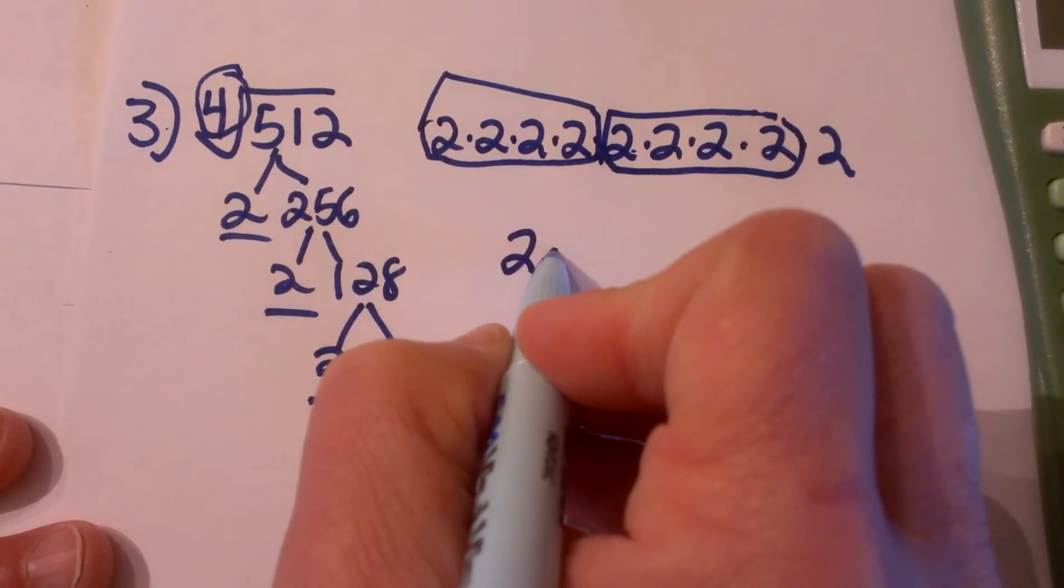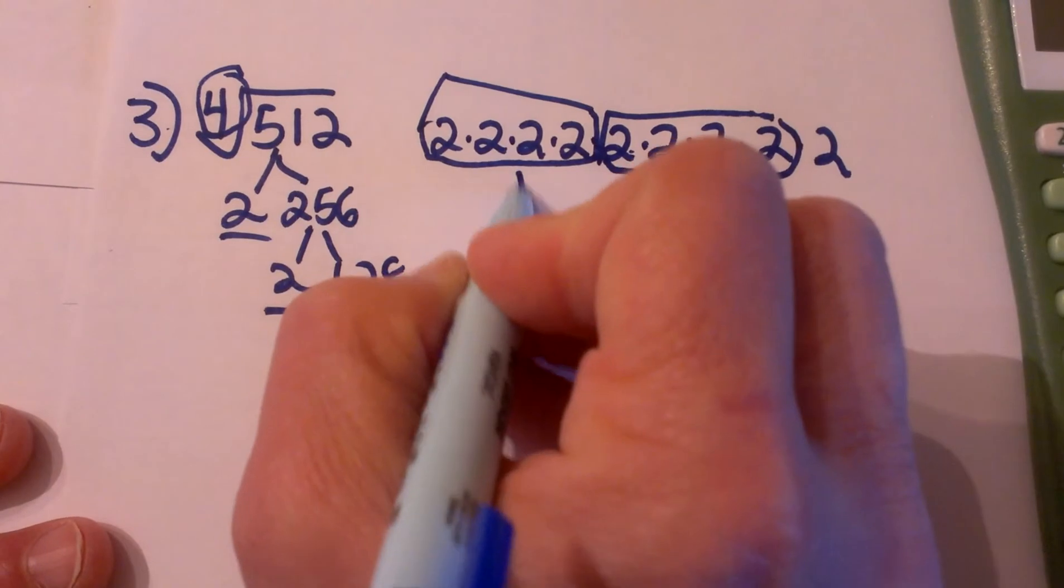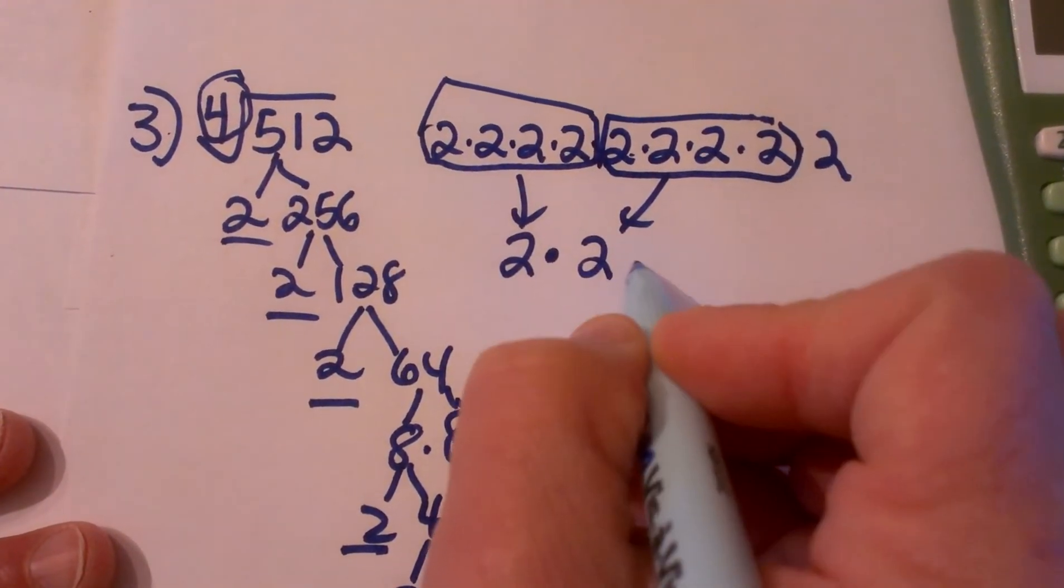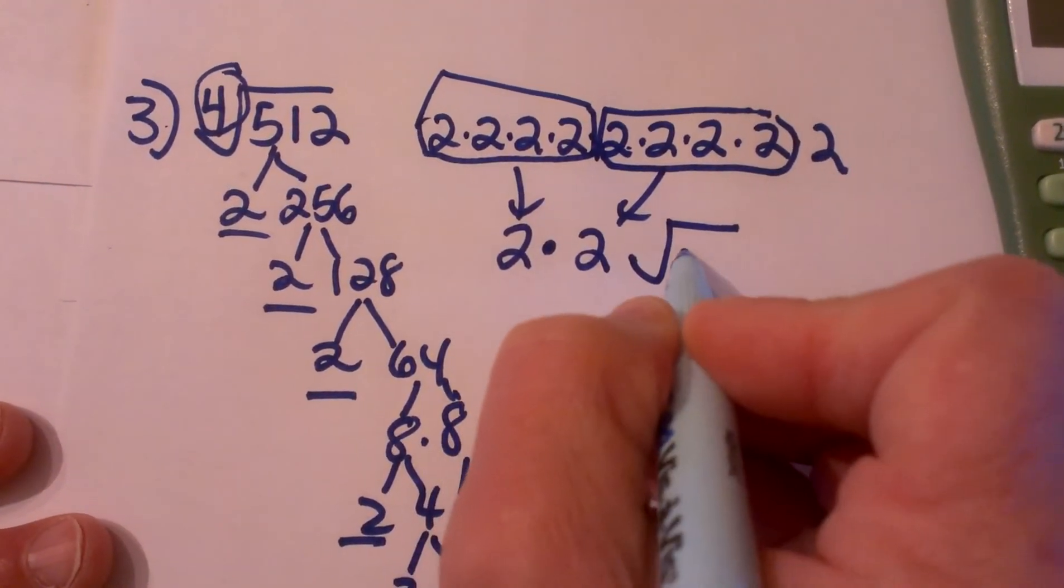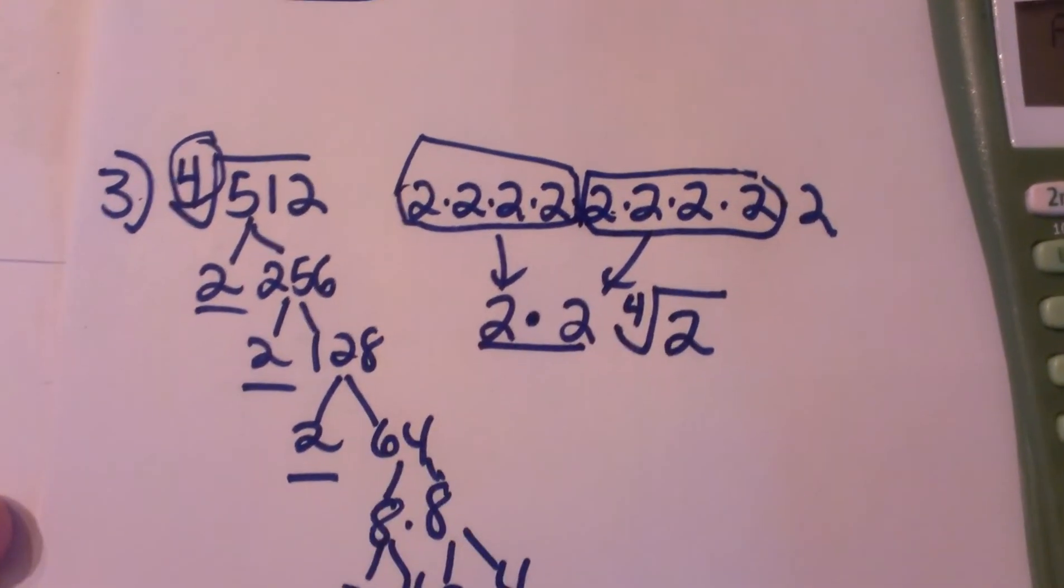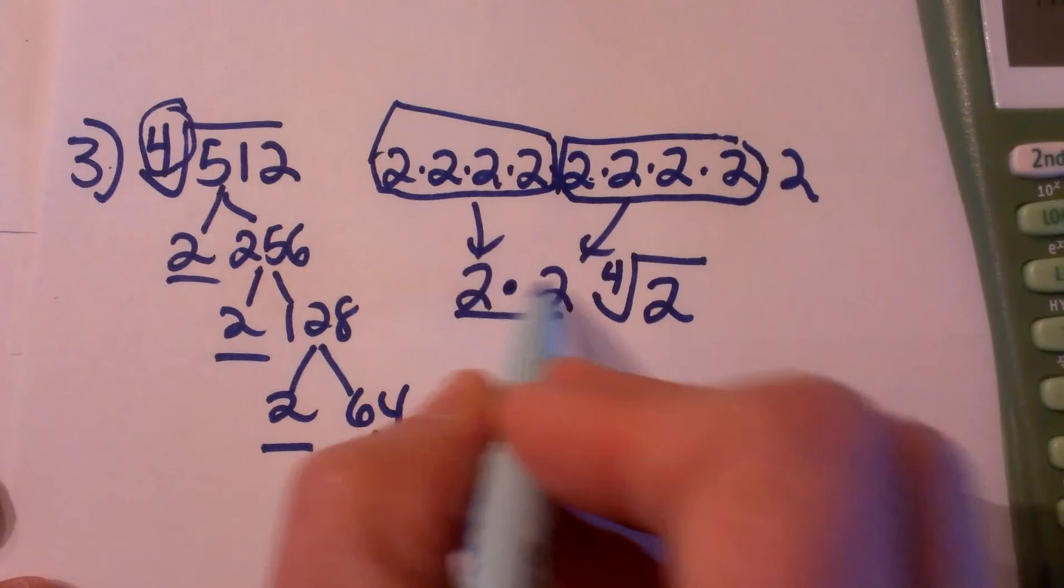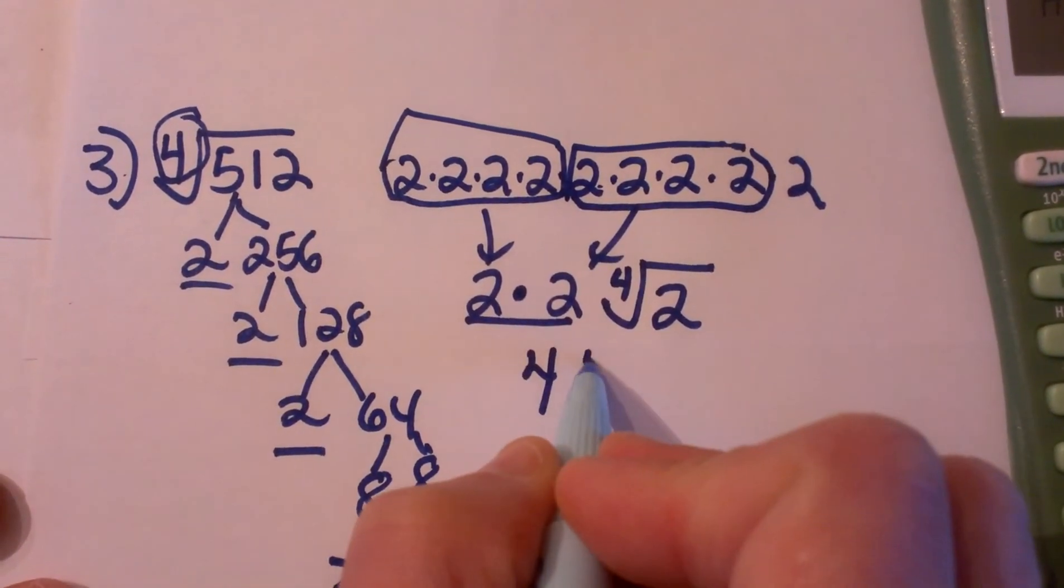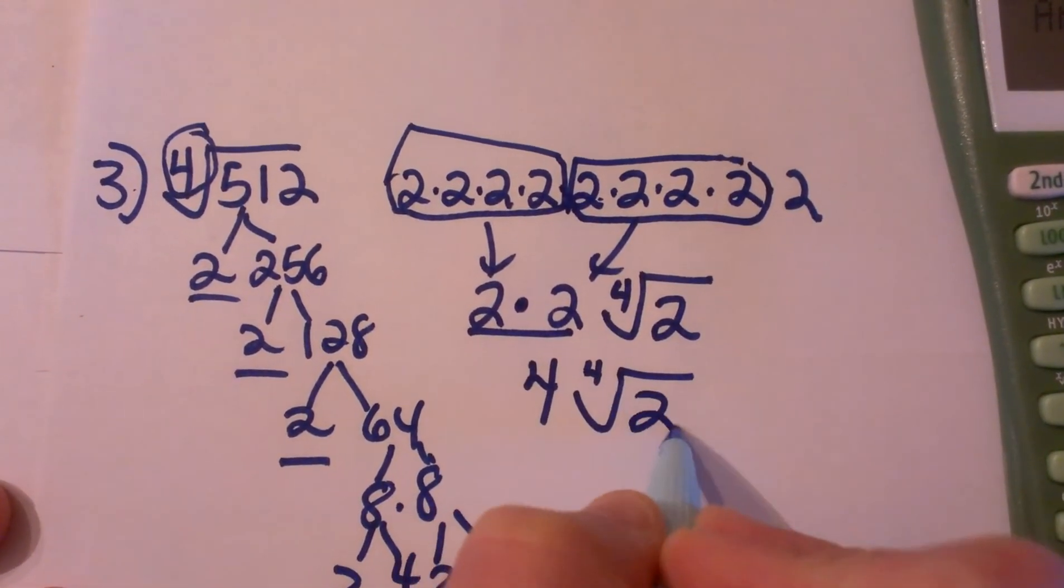So on the outside of the radical I am going to have 2 times 2 to represent each one of these groups. But then I have a 9th one, so it is going to have to stay in the radical as a 2, and don't forget your 4th root. Let's simplify the outside coefficient: 2 times 2 is 4, so it is 4 fourth roots of 2.